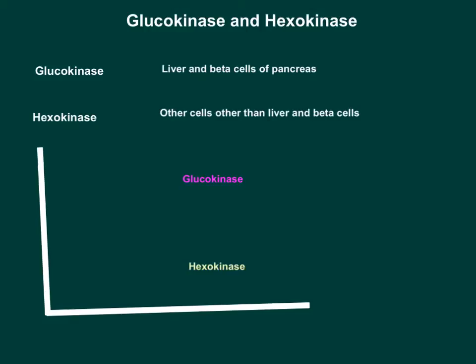Hello everyone. I felt like helping you understand glucokinase and hexokinase. Here is a video on why we have glucokinase and hexokinase enzymes. The function of both glucokinase and hexokinase is the same — they convert glucose into glucose-6-phosphate.